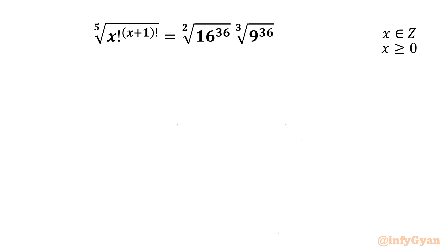Welcome back to Infigr, my dear friends. Today in this video we are going to take up another challenging question from exponential equations with factorials. It is the 5th root of x factorial raised to the power x plus 1 factorial, equal to the square root of 16 raised to the power 36 times the cube root of 9 raised to the power 36. x is a non-negative integer.